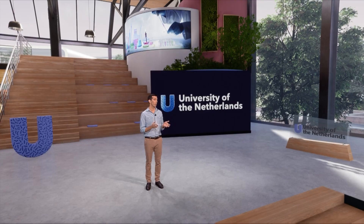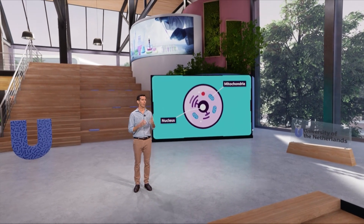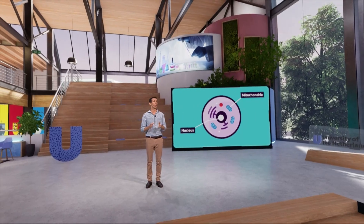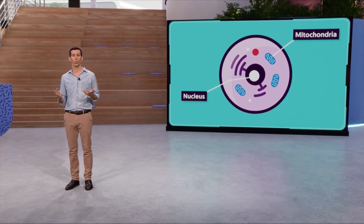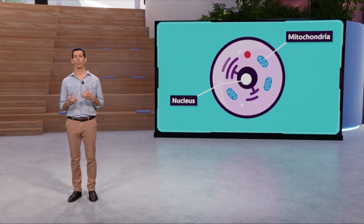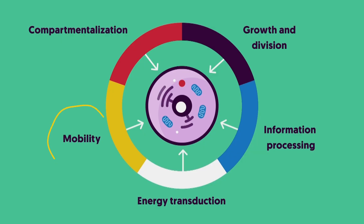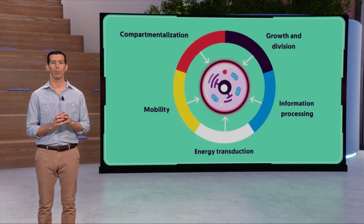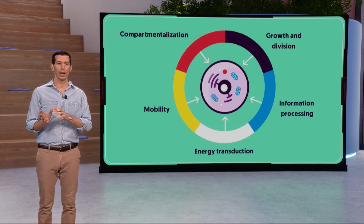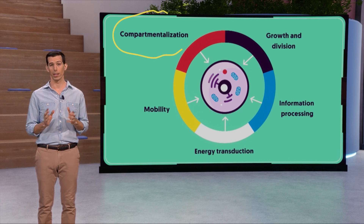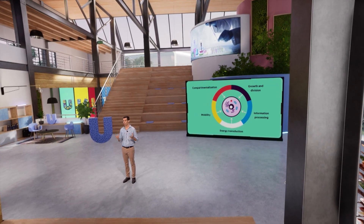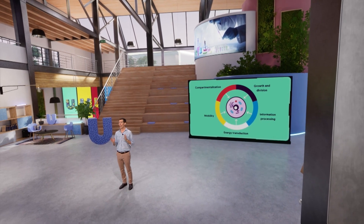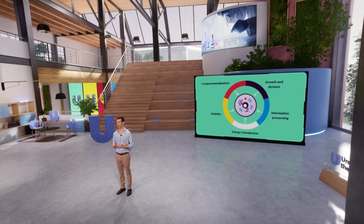A cell consists of lots of parts with many different functions. You probably already know of two: the nucleus, which contains all of the genetic information that a cell needs to function, and the mitochondria — the powerhouse of the cell — that converts food into energy the cell can use for other processes. These, along with other parts, allow for some of the core traits of life: mobility, growth and division, conversion of energy, and processing of information. Last but not least, there is the membrane — the outer lining which separates the inside of the cell from the outside world. This trait is called compartmentalization.